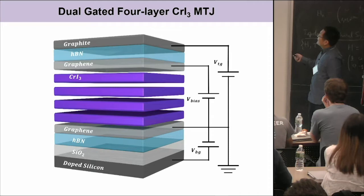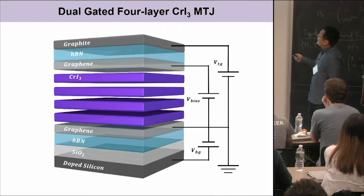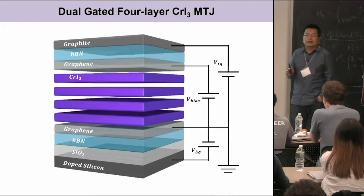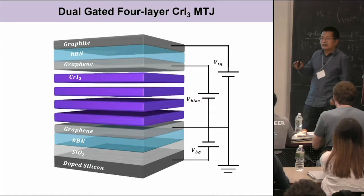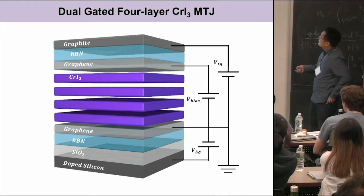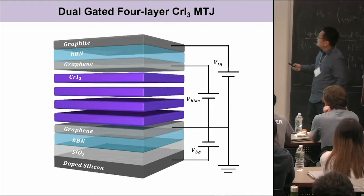To realize control, we make dual-gated four-layer chromium triiodide junctions. In the middle we have the four-layer chromium triiodide, and then we have monolayer graphene on top and bottom as tunneling contacts. Monolayer graphene is important not only as a contact, but because the density of states is low, so the electric fields can still penetrate through — allowing us to control the magnetic states using electric fields or doping. On top and bottom we have two gates: the top gate uses graphite, and the bottom uses a silicon dioxide gate. The reason for the graphite top gate is that we also do optical measurements, so we want the top gate to be transparent.